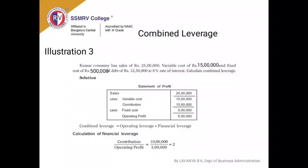Illustration 3 is on combined leverage. Combined leverage is simply the product of operating leverage and financial leverage. Kumar Company has sales of 25 lakhs, variable cost 12 lakh 50,000, fixed cost 5 lakhs, and debt of 12 lakh 50,000 at 8% interest. From the statement of profit: sales − variable cost = contribution. 25 lakhs − 15 lakhs = 10 lakhs contribution. 10 lakhs − 5 lakhs fixed cost = 5 lakhs EBIT.